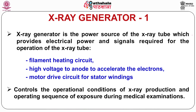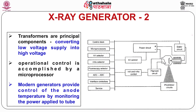Now we will talk about the X-ray generator. The X-ray generator is the power source of the X-ray tube, providing electrical power and signals required for its operation: filament heating circuit, high voltage to the anode, motor drive circuit for stator windings, and control of operational conditions for X-ray production during medical examinations. It supplies current at a high voltage of 20 to 150 kV needed for X-ray production.